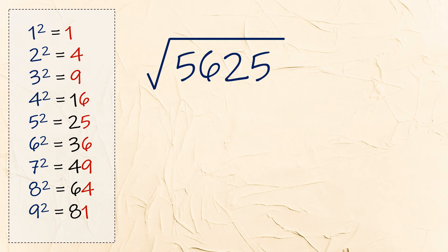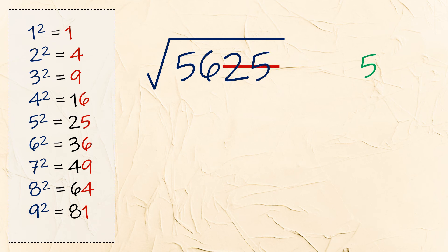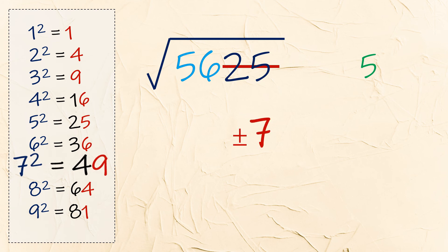Keep on practicing. Next, the square root of 5625. The last digit is 5, and we only have one square number that ends with 5, so we do not have to choose later. Cross out the last two digits — we now have 56. The closest number to 56 is 49, so the first digit is 7. Since we only have one option for the last digit, we do not have to multiply 7 by 8. The answer is positive and negative 75.